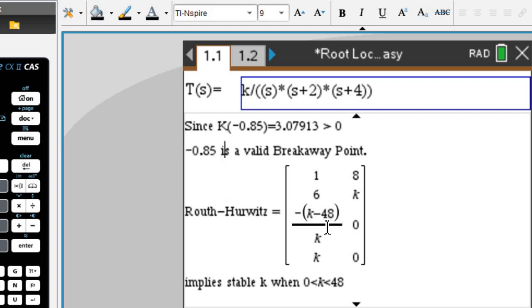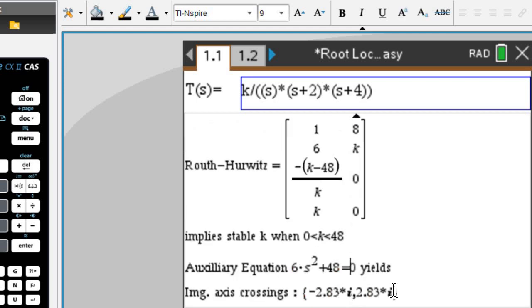The Routh-Hurwitz system implies that we have a stable k between 0 and 48. The auxiliary equation is right here, which implies that the imaginary axis crossings are at negative 2.83 plus and minus.